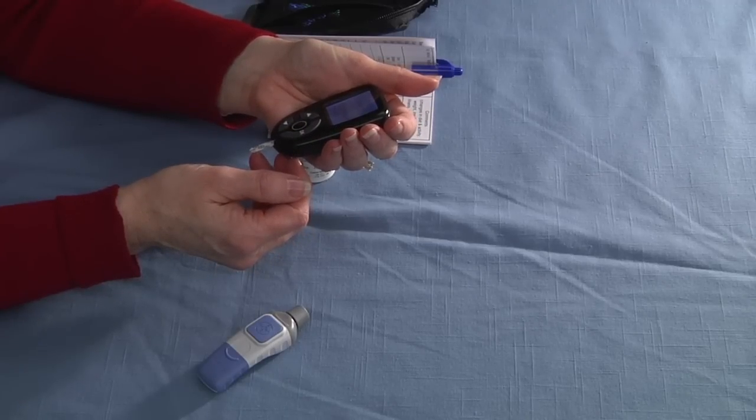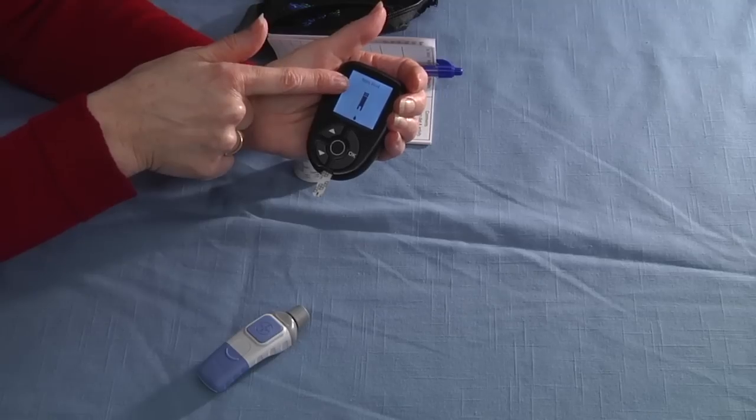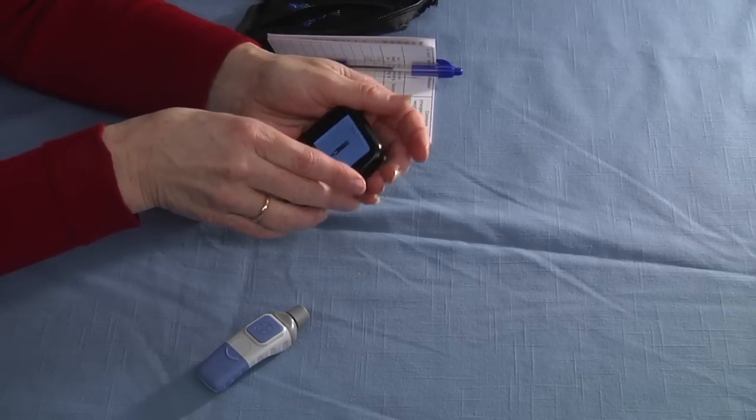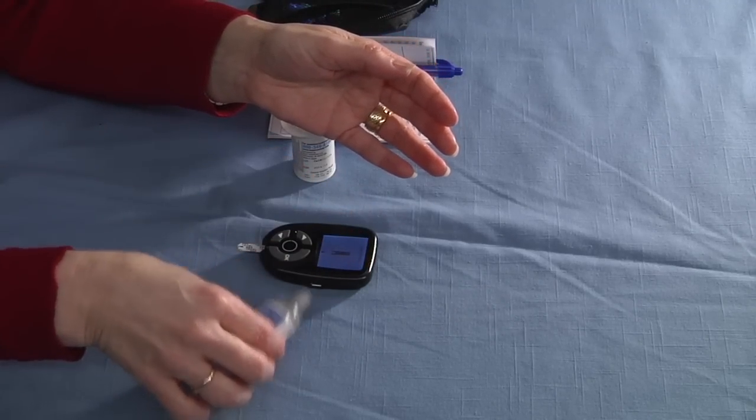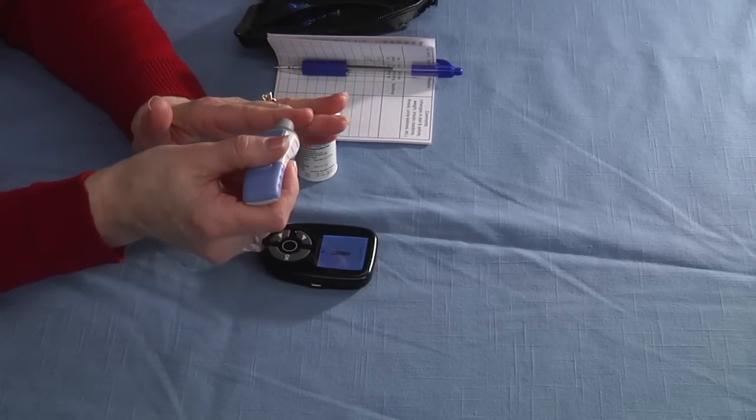Then you're simply going to wait until the meter prompts you or follow the pictures. It's asking for a drop of blood. At this point, I'm going to take my lancet holder and I'm going to hold it against the side of my finger.